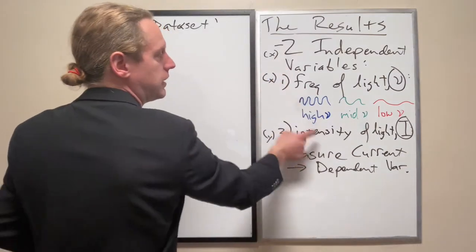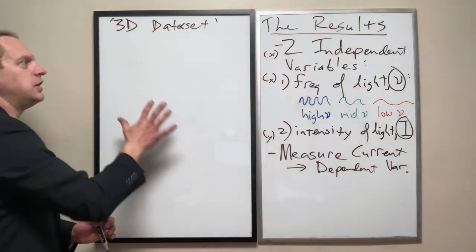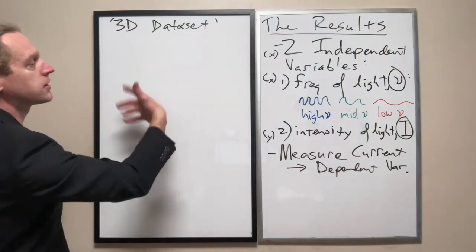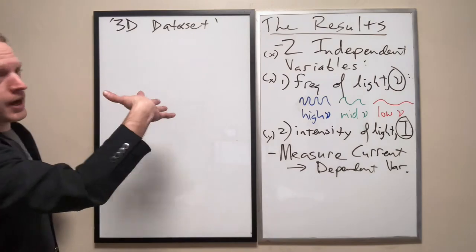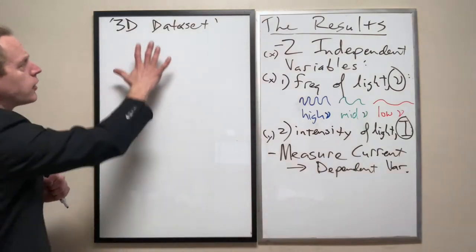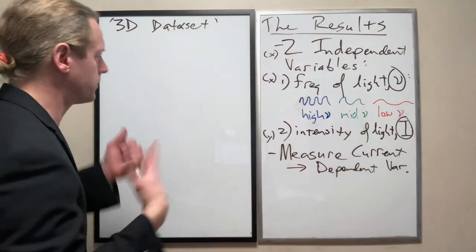So what I'm going to do is I'm going to graph kind of an x, y grid, the two independent ones, frequency and intensity. And you can think of the third variable, the response, the dependent variable as kind of a height meter here.